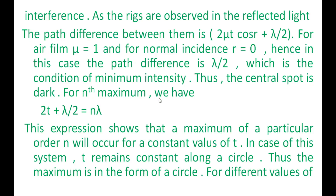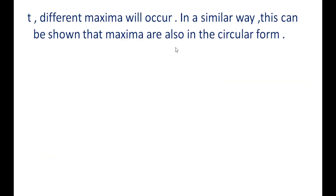For maximum intensity (bright rings), the condition is: 2t + λ/2 = nλ. For minimum intensity (dark rings), the path difference gives a dark appearance. Since the thickness of the air film gradually increases outward, for different values of thickness t, different maxima will occur, forming circular bright and dark rings.